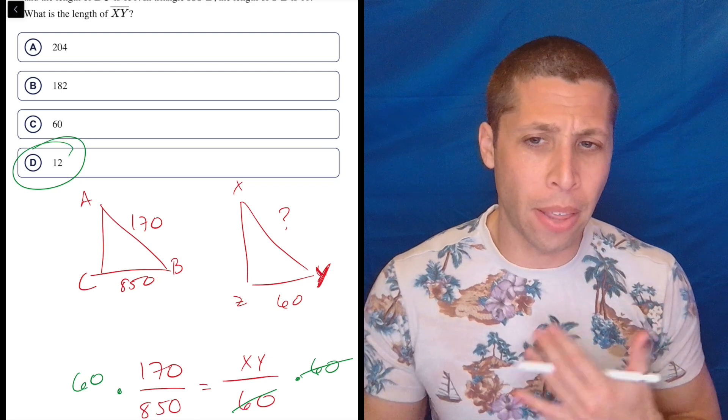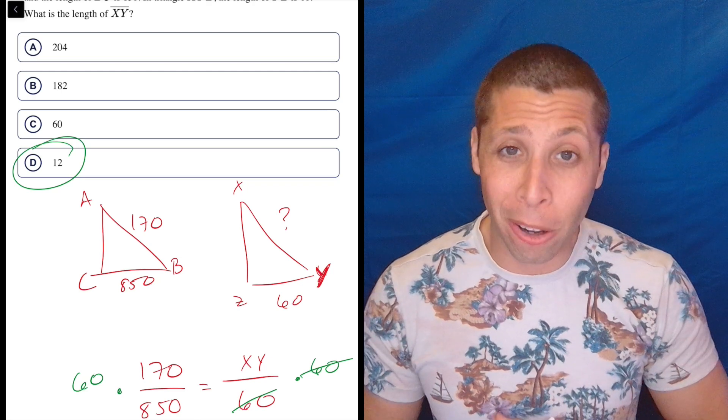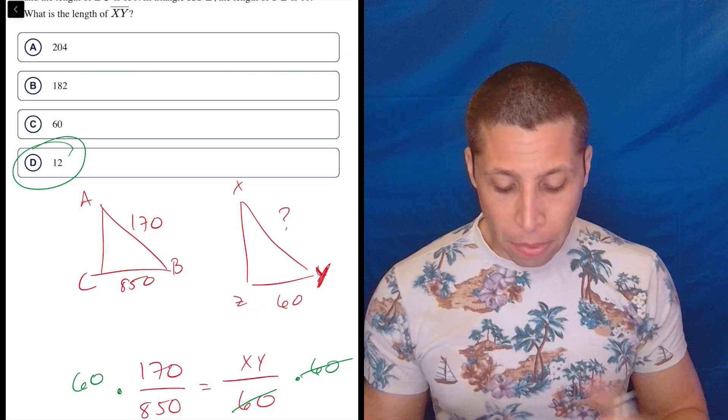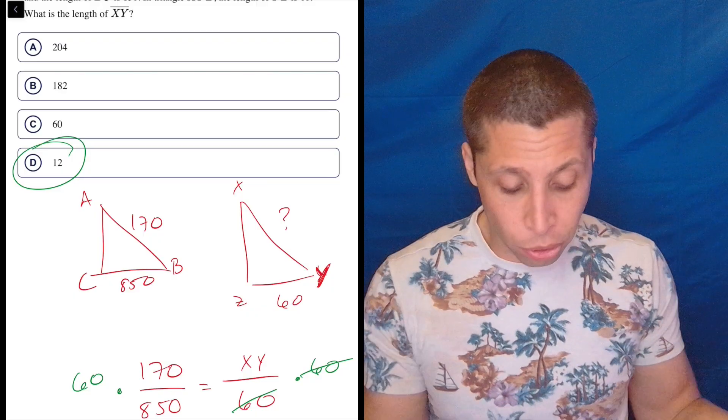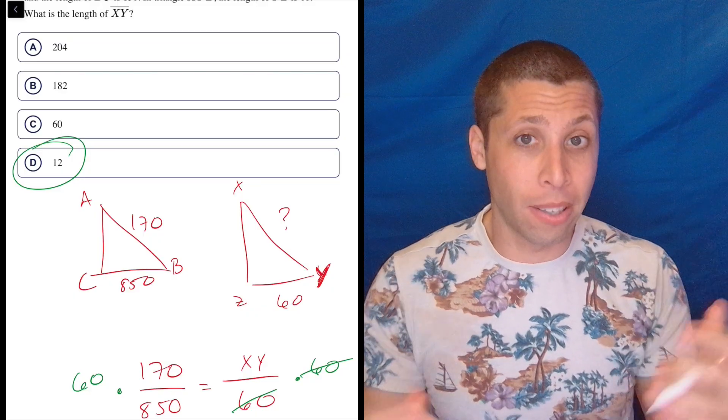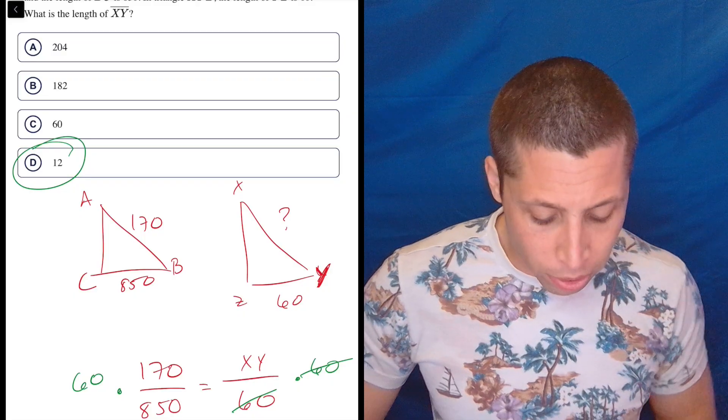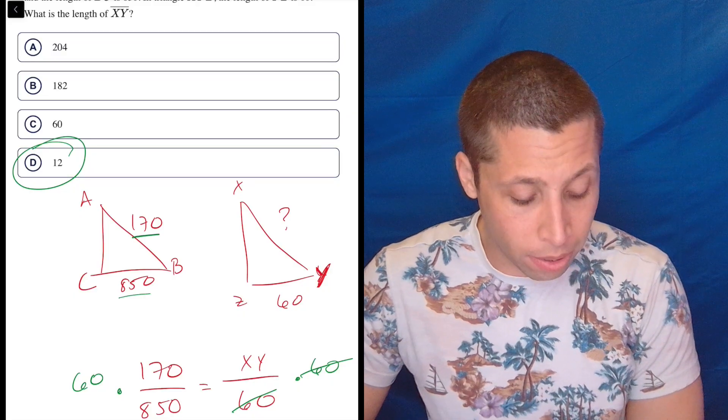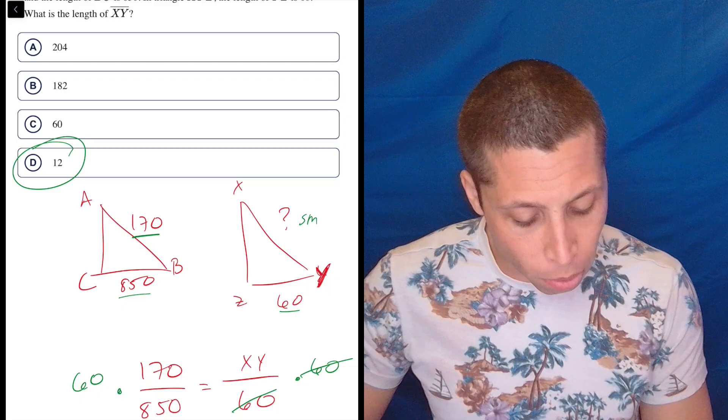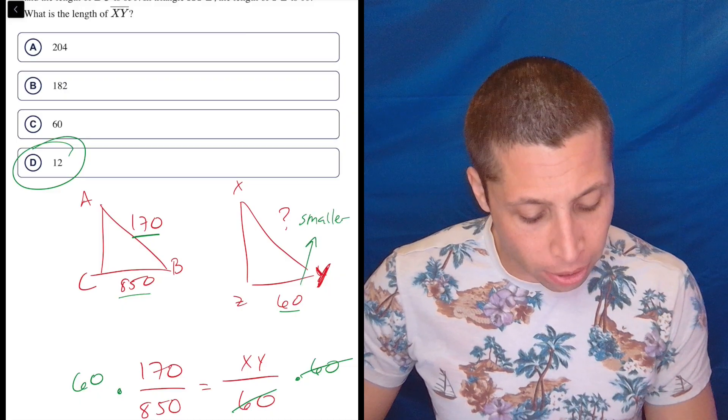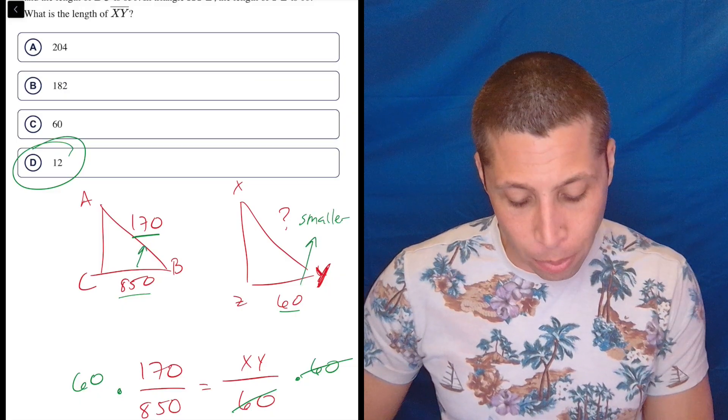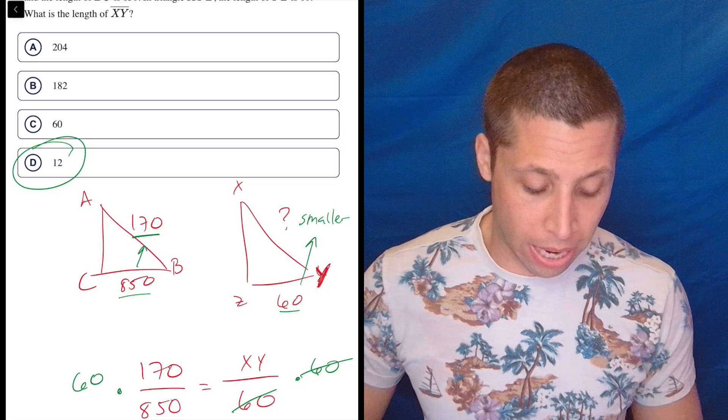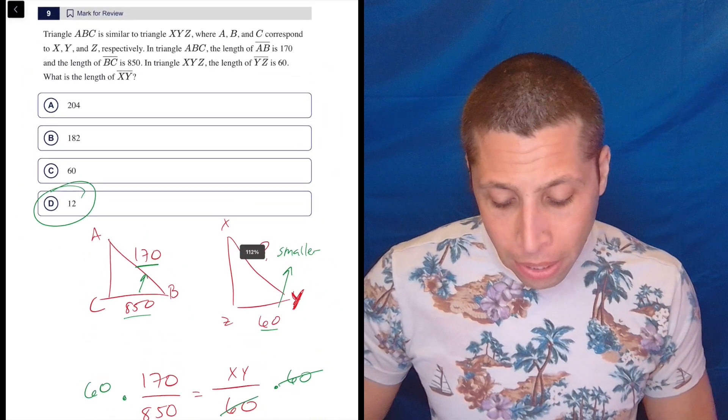So there's a lot of big numbers here, and I think maybe the fact that the answer is 12 scares people. But remember, the left side triangle is the big one. The right side triangle is kind of like a normal size if such a thing exists, but also notice the relationship between the 850 and the 170. That's a big difference as well. So it makes sense that we would have a much smaller side here compared to our 60 in the same way that 170 is much smaller than 850. So it all works out.